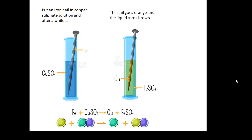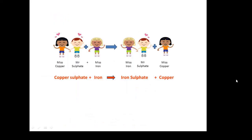And this is a displacement reaction. Think of it like this: there's copper sulphate, the happy couple. Miss Iron comes along and she pinches Mr. Sulfate. You end up with iron sulphate, the happy couple, and Miss Copper has been kicked out. So: copper sulphate plus iron goes to iron sulphate plus copper, and that is a displacement reaction.